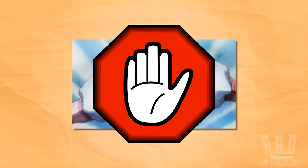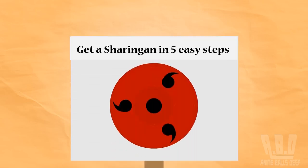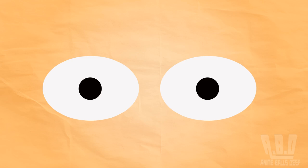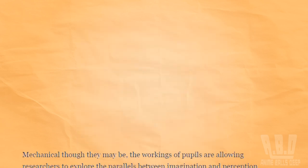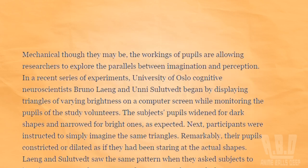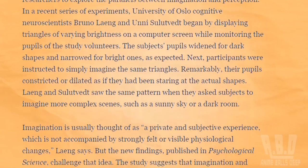Before you get too excited here, I'm not saying that you'll be able to learn how to obtain the sharingan you've always wanted, but you might be able to pretend that you have one by being able to increase and decrease the size of your pupils at will. A 2014 study that was published through Psychological Science showed that research subjects were able to narrow and widen their pupils by simply thinking about observing dark and light shapes.